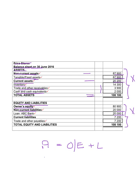Current liabilities is money that will be paid out within 12 months. Trade and other payables is the amount you owe to creditors because you bought goods on credit. If you have a bank overdraft, it will be shown here under current liabilities, and the bank amount will not be shown under cash and cash equivalents. It's very important to distinguish whether the bank has a favorable or unfavorable balance. A favorable balance — debit balance — is shown under cash and cash equivalents. An unfavorable balance means you owe money to the bank, so it's shown as a current liability bank overdraft, meaning you wrote out more checks than the amount deposited.